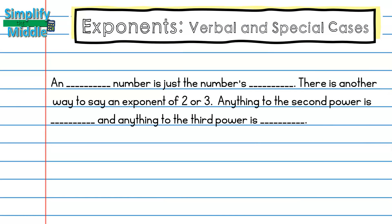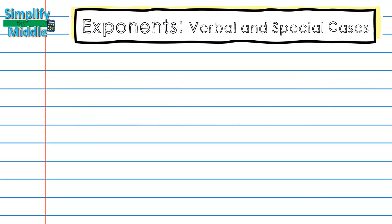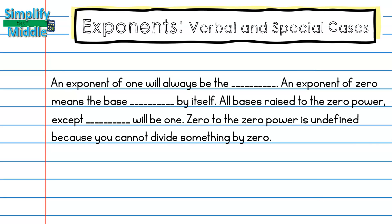Let's recap. An ordinal number is just the number's position. There is another way to say an exponent of 2 or 3. Anything to the second power is squared and anything to the third power is cubed. We know that an exponent of 1 will always be the base. An exponent of 0 means the base divided by itself. All bases raised to the zero power, except for zero, will be 1. And zero to the zero power is undefined because you cannot divide something by zero.